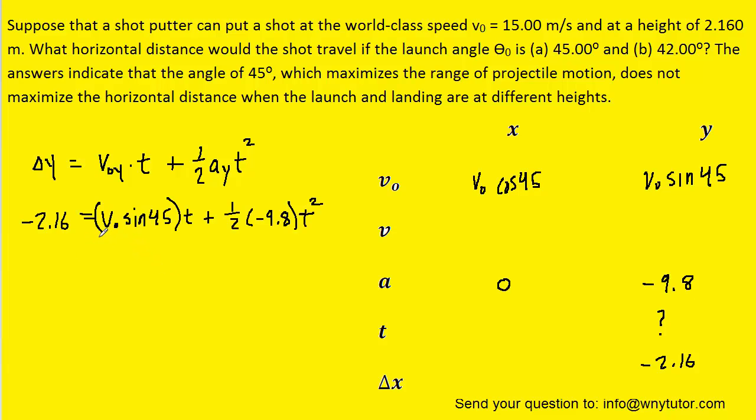We recall that the initial speed was given to us as 15 meters per second, so we can plug that in. We'll then simplify this value, as well as 1 half times negative 9.8. We'll have to add the 2.16 to the right side. And then we have a quadratic equation that we can solve for the time t.